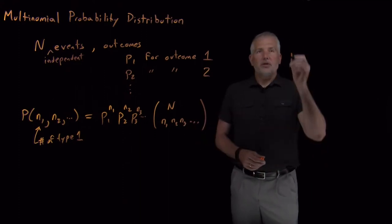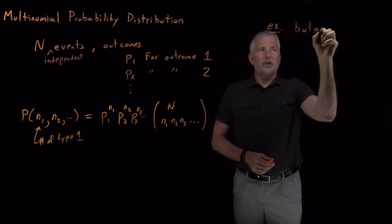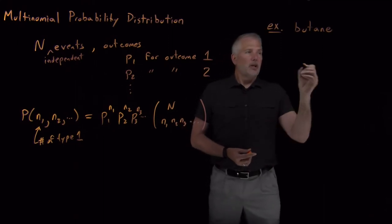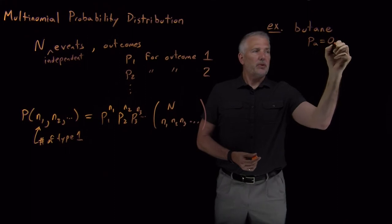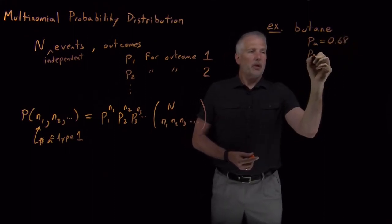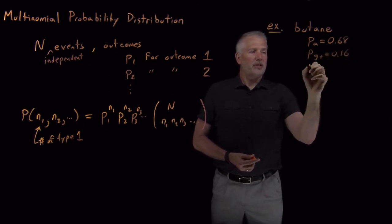So let's do an example and make sure that's clear. And we'll use our butane molecule for that example, where again we know that at room temperature we've used these numbers before. The probability of being in the anti-configuration is 68%. The probability of being in the gauche-plus configuration is 16%.